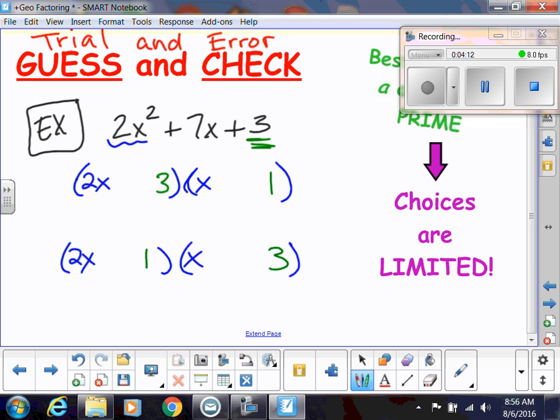So we need to be able to figure out which one is the correct one, and we're going to use the middle term, the 7x, to help us do that. Remember, in order to get that middle term, we did the outer ones and the inner ones. So the outer product is going to be 2x, and then the inner term is going to be 3x. So if I were to add those together, 2x plus 3x, that gives me 5x. That's not 7x. So I know that this would be the incorrect combination.